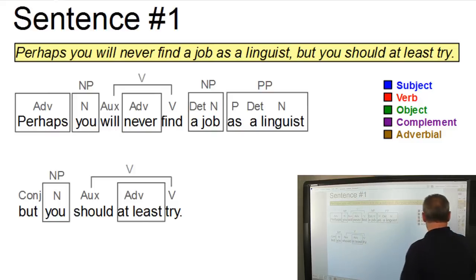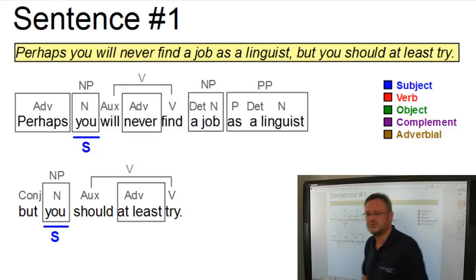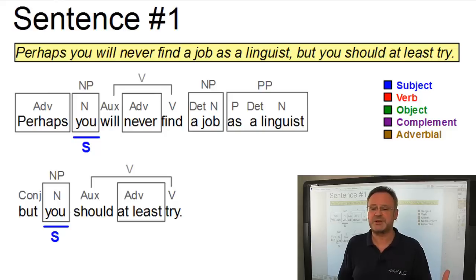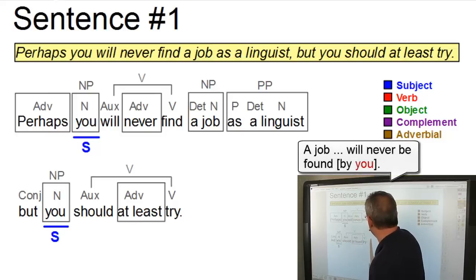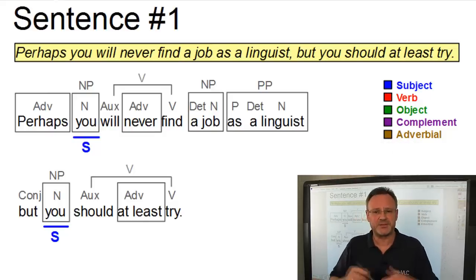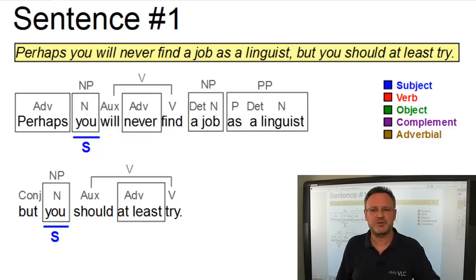In both cases, we have the subject, so in both clauses, we have the subject you. In the first clause, it must be the subject because it surfaces as the by phrase if we passivize that clause. A job as a linguist will never be found by you. By you indicates that you must be the subject of the corresponding active sentence.